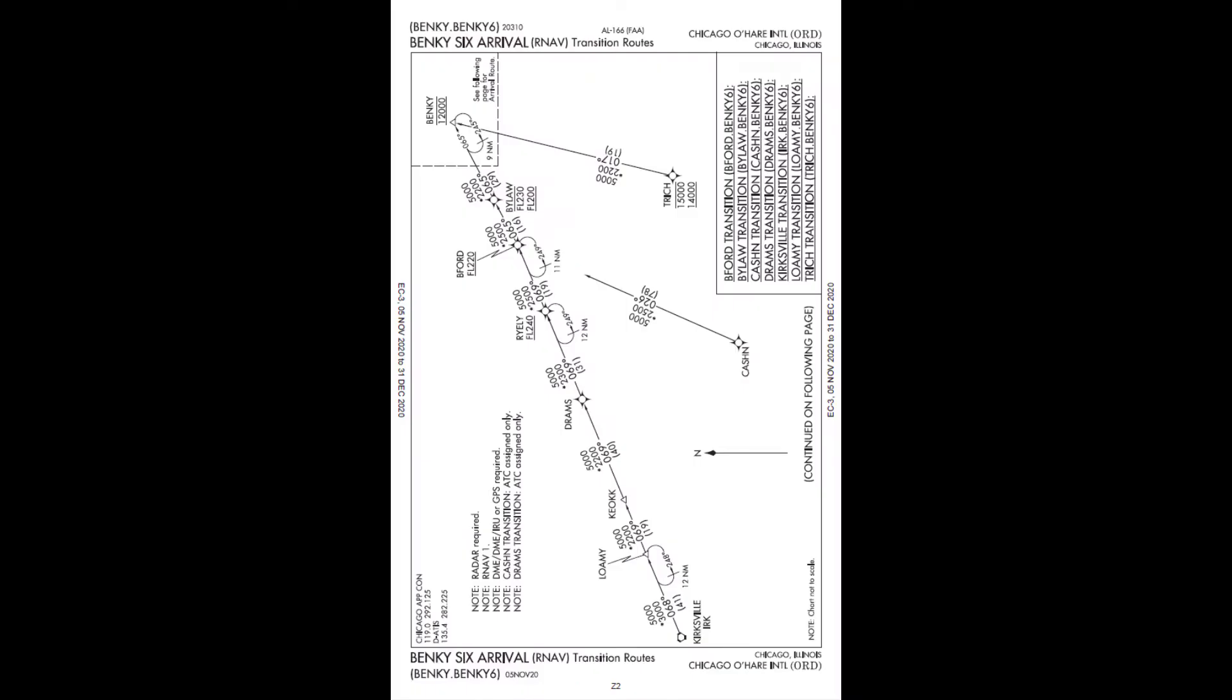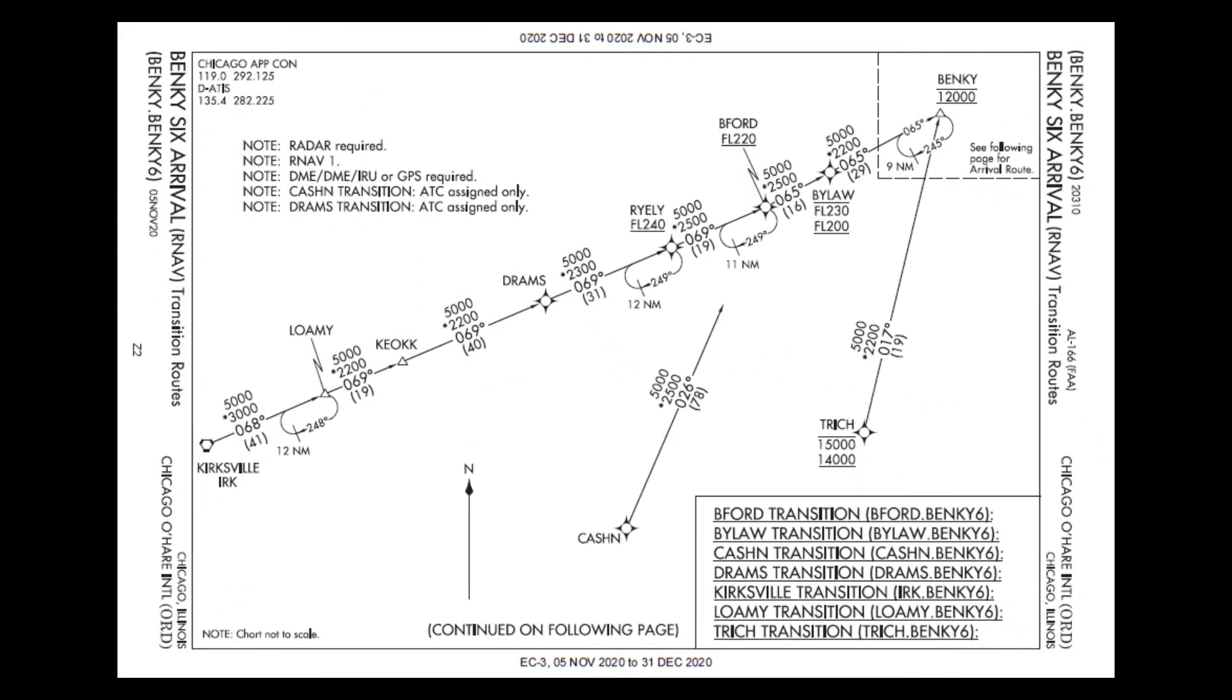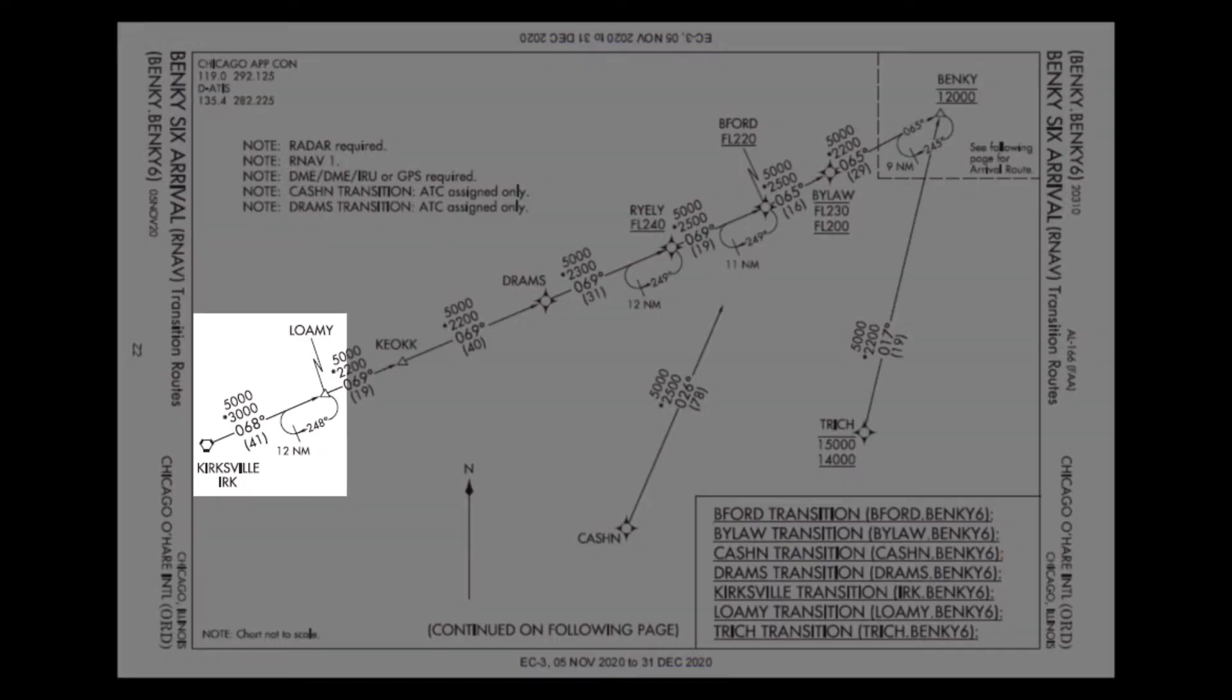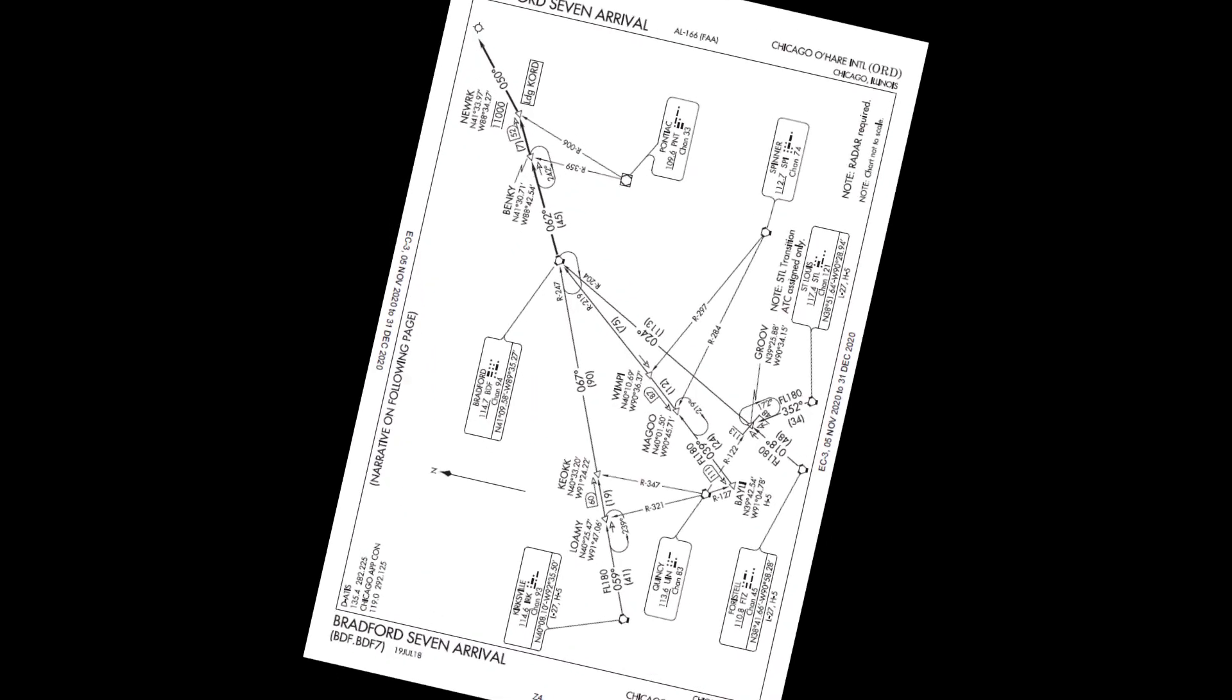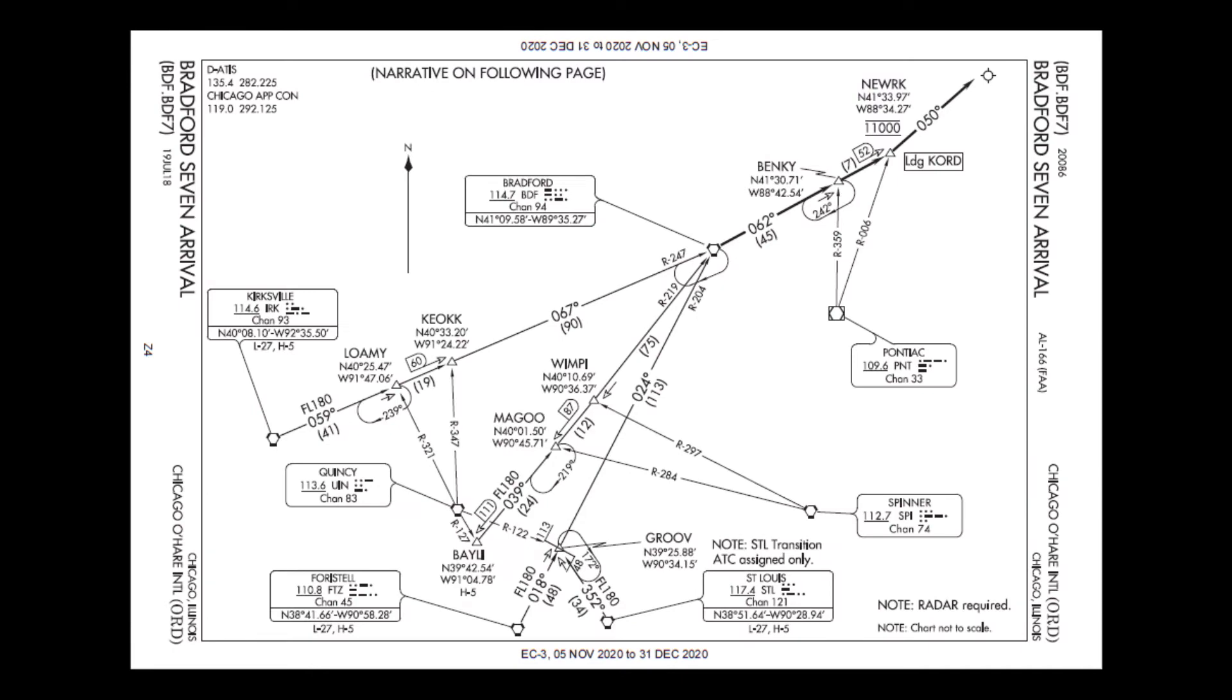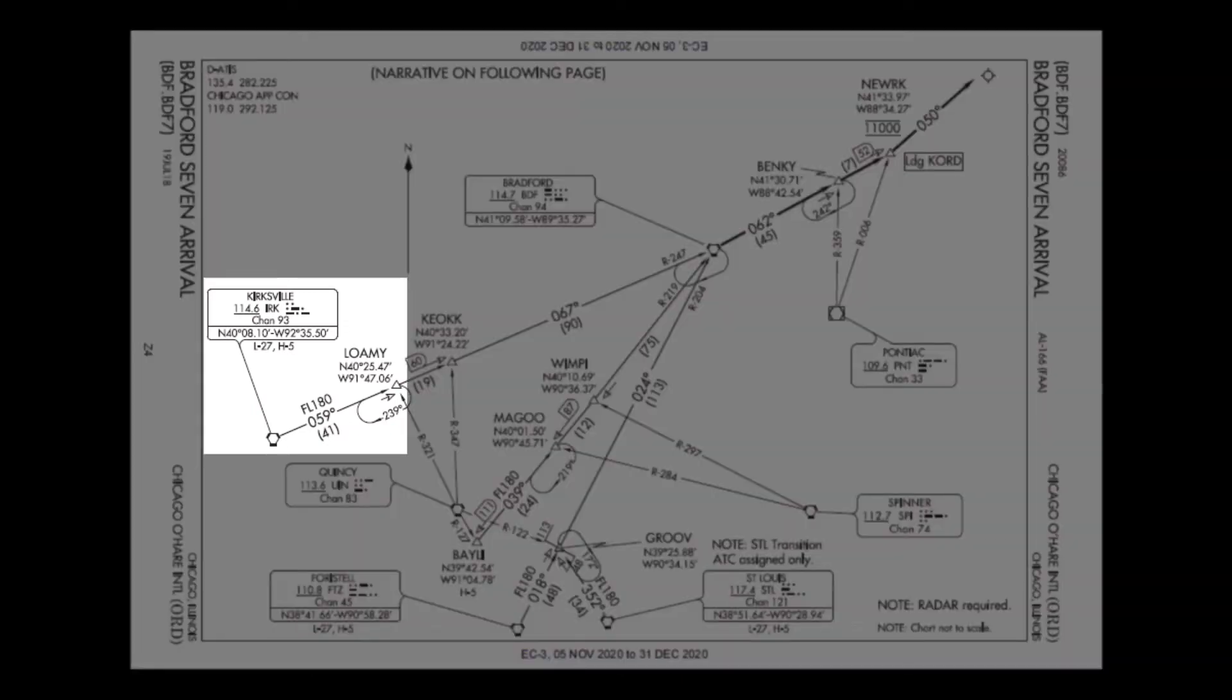We're finally on our way to join the arrival into Chicago. We're assigned the Benke 6 RNAV arrival, Kirksville transition. The first leg is from Kirksville VOR to Lomi intersection on a 68 degree heading. We see there's also the Bradford 7 arrival, Kirksville transition. The first leg is also from Kirksville VOR to Lomi intersection but on a 59 degree heading, or a 9 degree difference from the RNAV arrival.